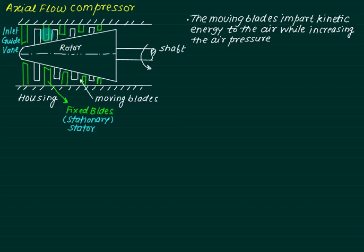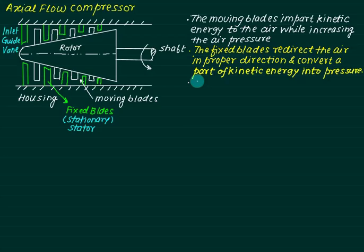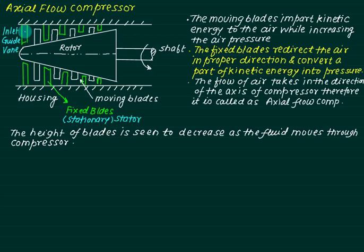The moving blades mounted on the rotor impart kinetic energy to the air while increasing the air pressure. The fixed blades mounted on the housing redirect the air in the proper direction and convert part of the kinetic energy into pressure. The flow of air takes place along the axis of the compressor, which is why it is called an axial flow compressor. The blade height decreases as we move from inlet to outlet.